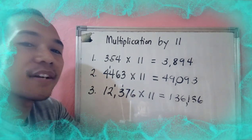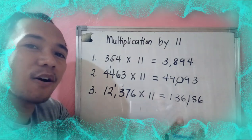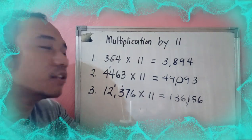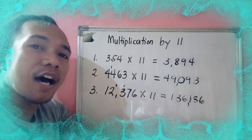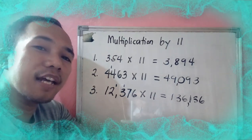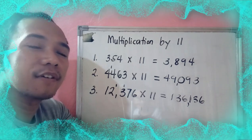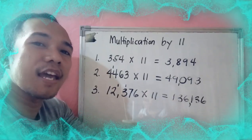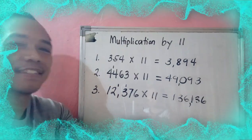So the answer is 136,136. That's all. I hope you learned the shortcut method of multiplication by 11. Don't forget to like and subscribe here on my YouTube channel. Thank you and good day.